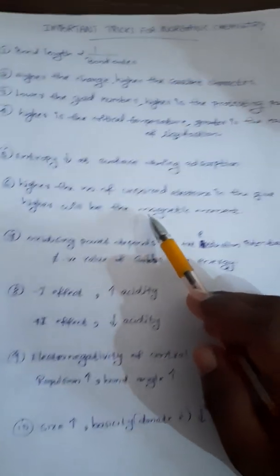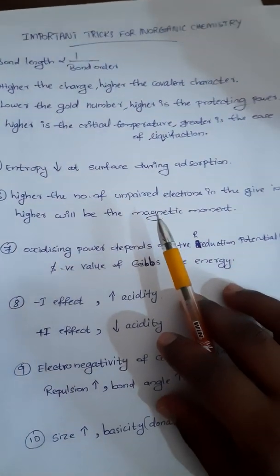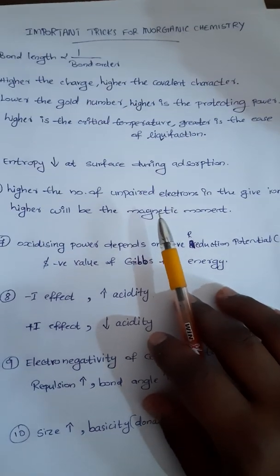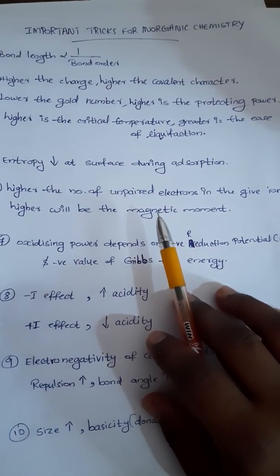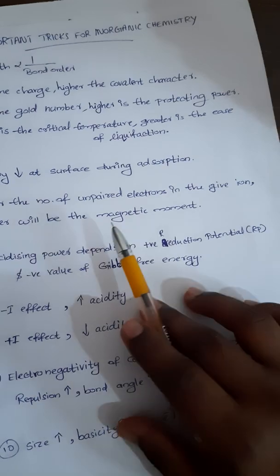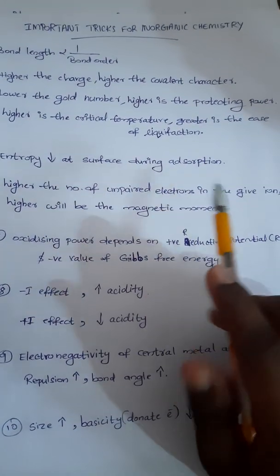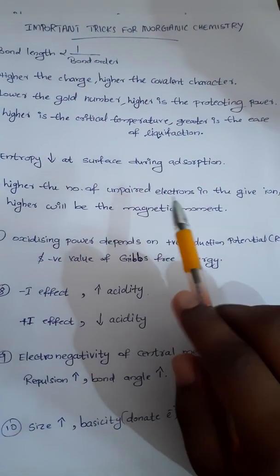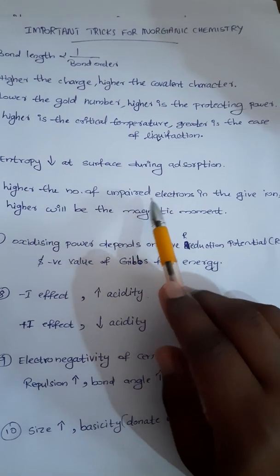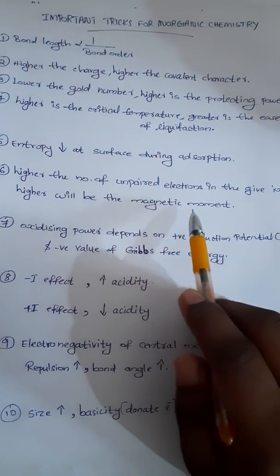Next point: higher the number of unpaired electrons in the given ion, then higher will be the magnetic moment. So the number of unpaired electrons in the ion is directly related to the magnetic moment.